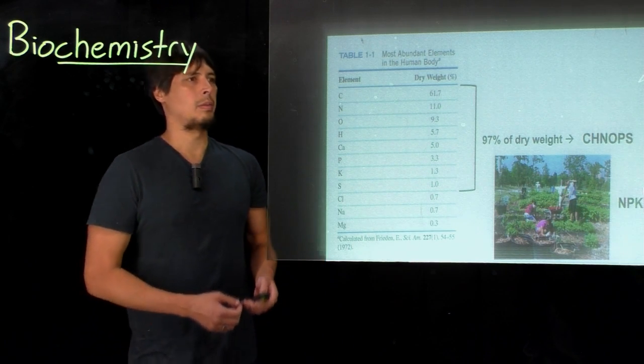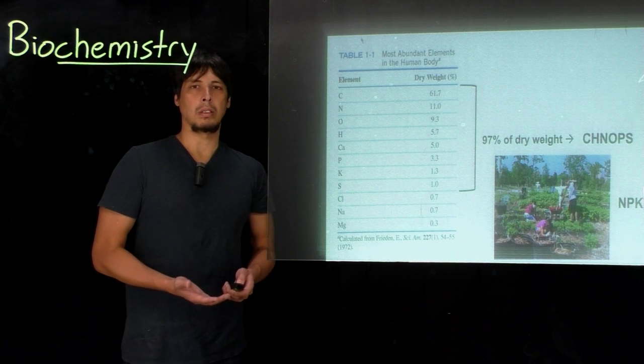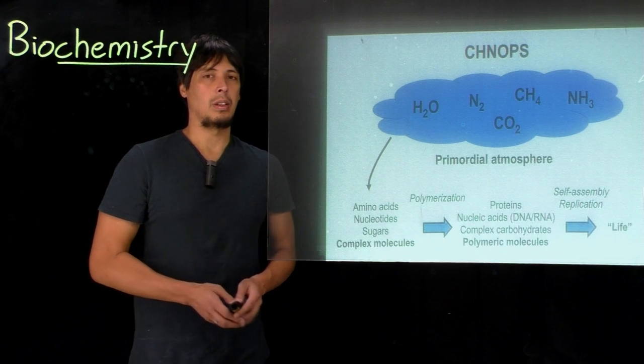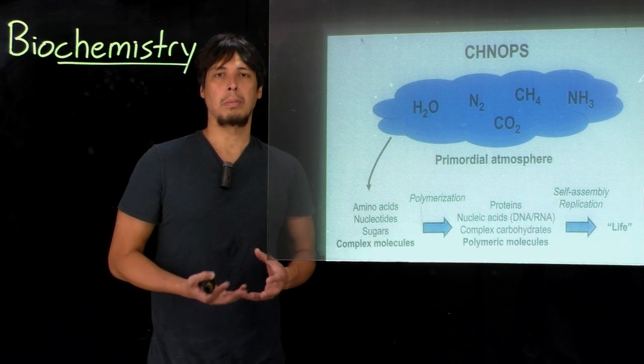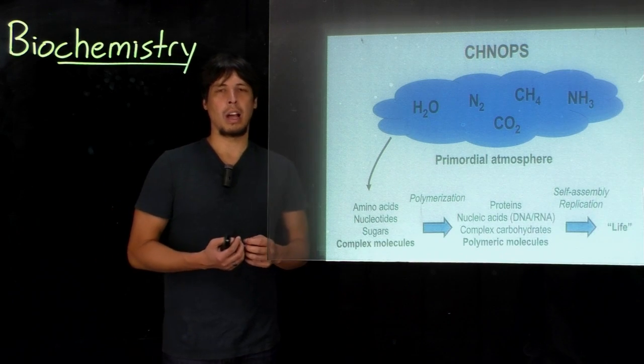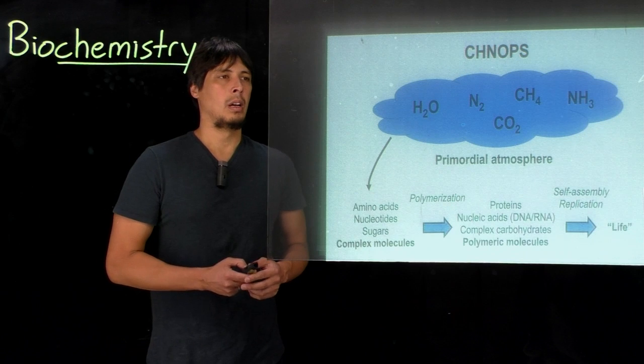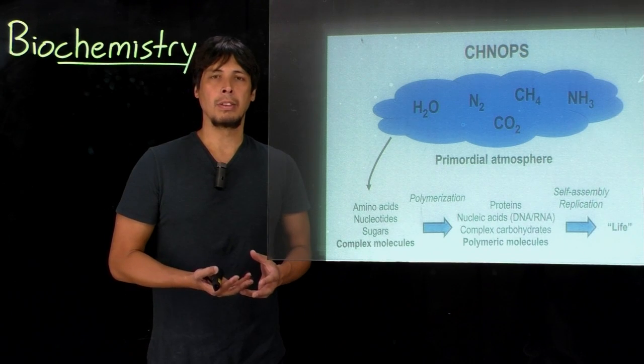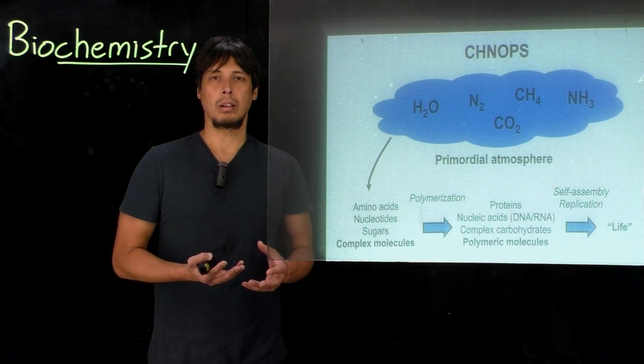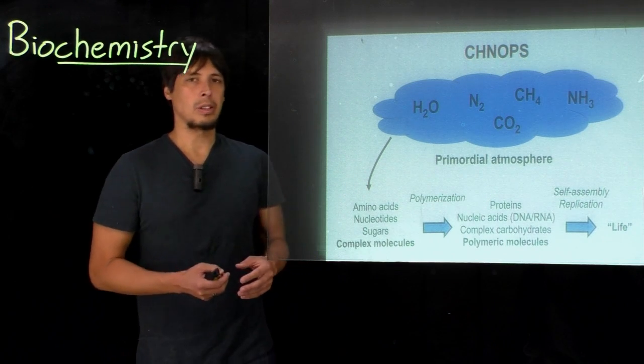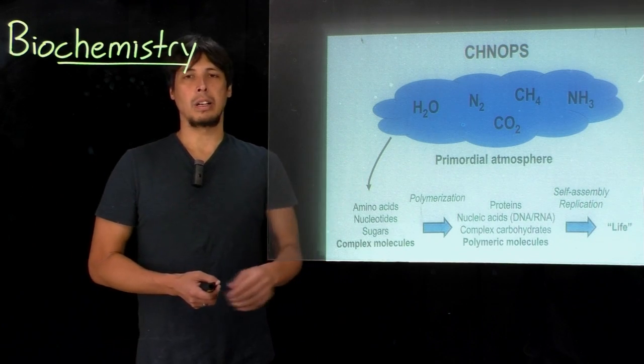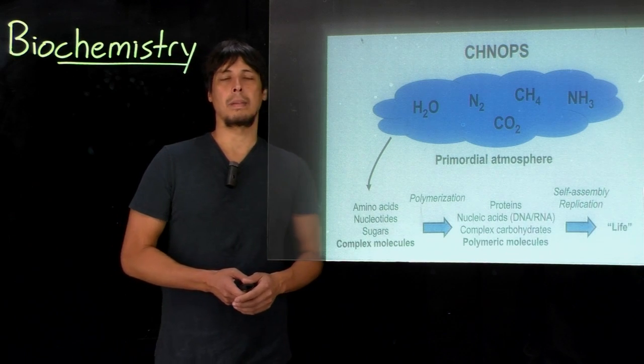Most of these elements don't exist in an elemental form like this in biology. They exist within more complex biomolecules. And so it's interesting to look at how might these complex molecules have been formed. One theory for the origin of life is that complex molecules that we see now in biological systems originated from a primordial atmosphere with much more simple molecules, such as water, sulfur, dinitrogen gas, carbon dioxide, methane, and ammonia.